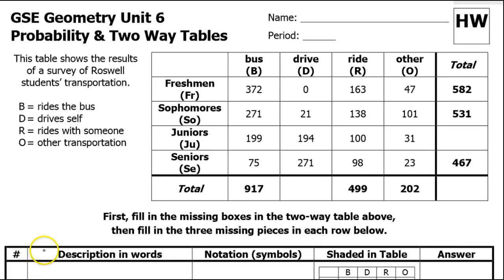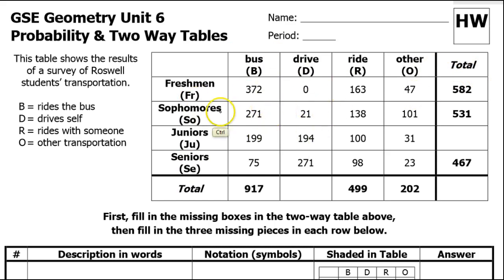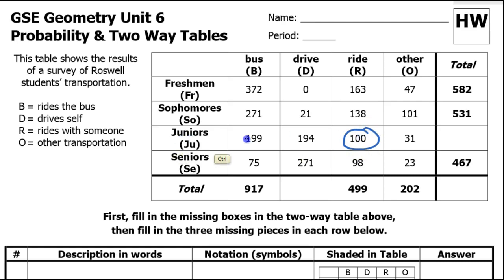In this video, I'm going to show you how to work with a two-way table like this one. A two-way table just has some labels going down the side, some labels going across the top, and you can see how those interact with each other. For example, we have some students who ride with someone, and some students are juniors. So the number 100 represents juniors who ride with someone. That's how a two-way table works.